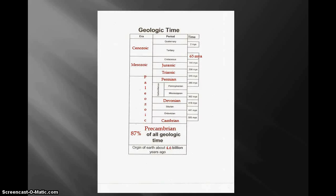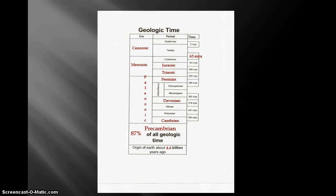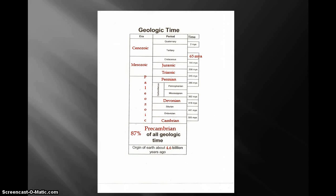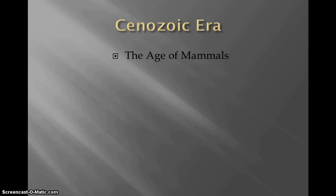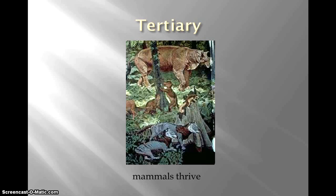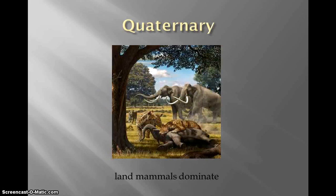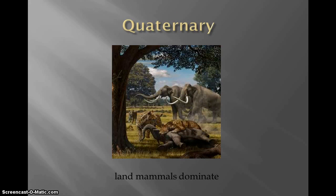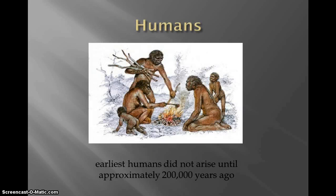Now we are on the Cenozoic, which is the Tertiary and Quaternary — the age of mammals. It's divided into two periods: Tertiary and Quaternary. This is when mammals thrived and land mammals started to dominate. Humans did not arise until approximately 200,000 years ago.